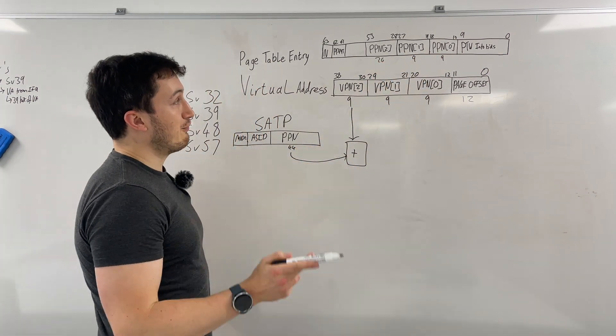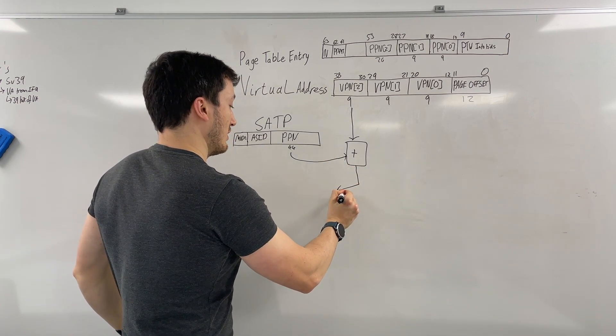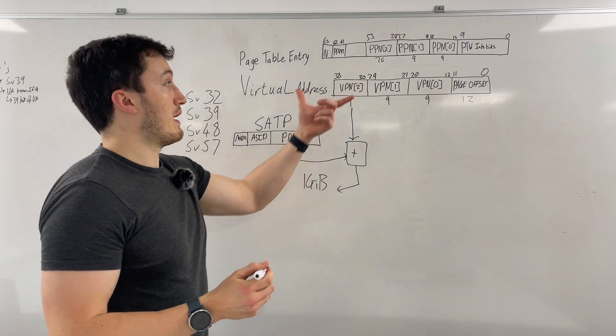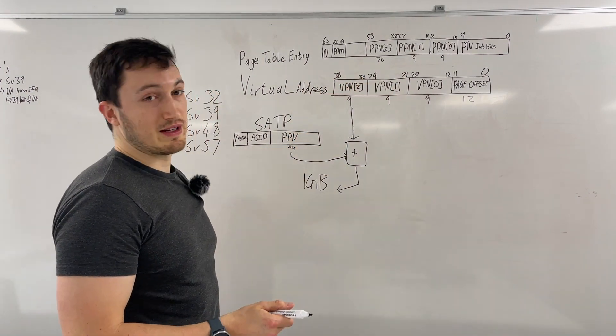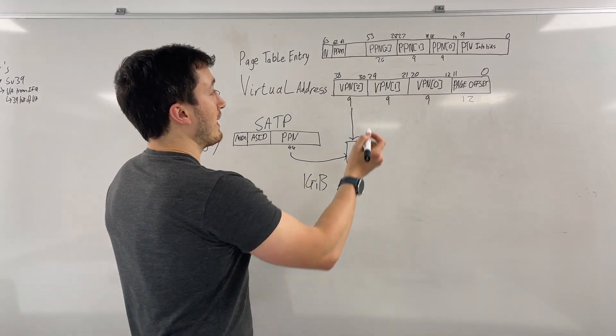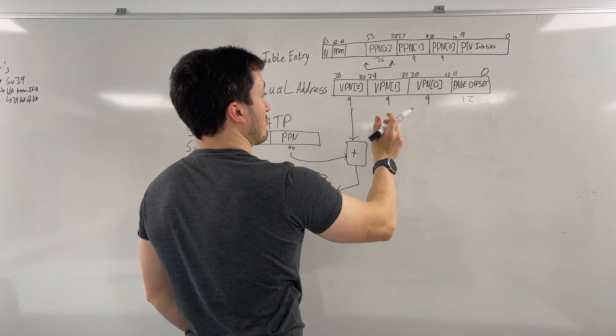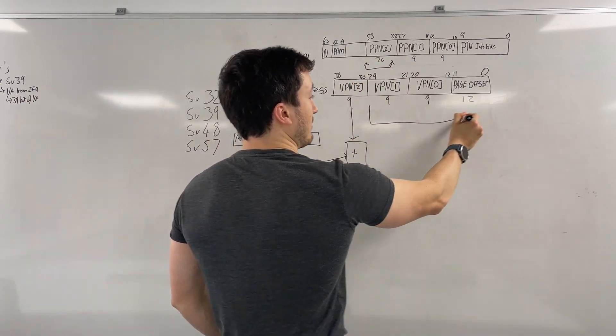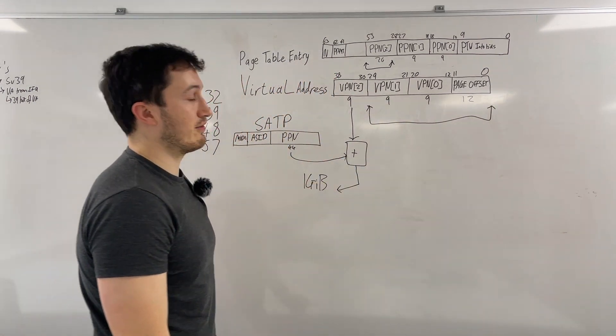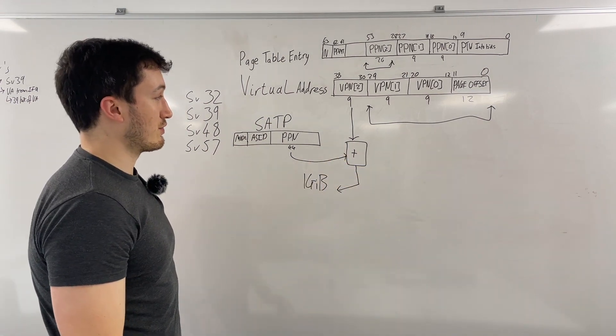If it's a leaf page, what we know then is it's a one gigabyte page. So once we have the page table entry returned, we can find out what the final physical address is to return to the IFU or the DCU by taking the 26 bits here from the page table entry and concatenating it with the virtual address here to get a 56-bit wide physical address, which then can be returned and used for translation.